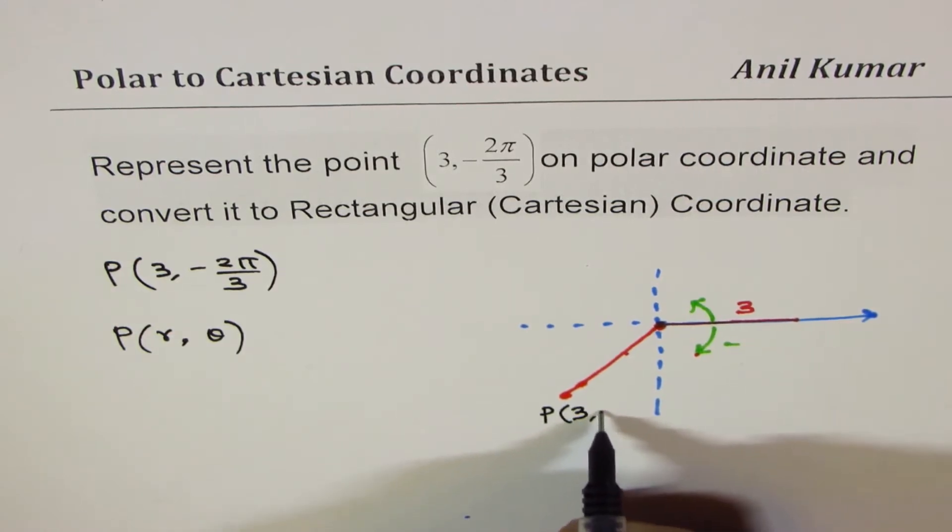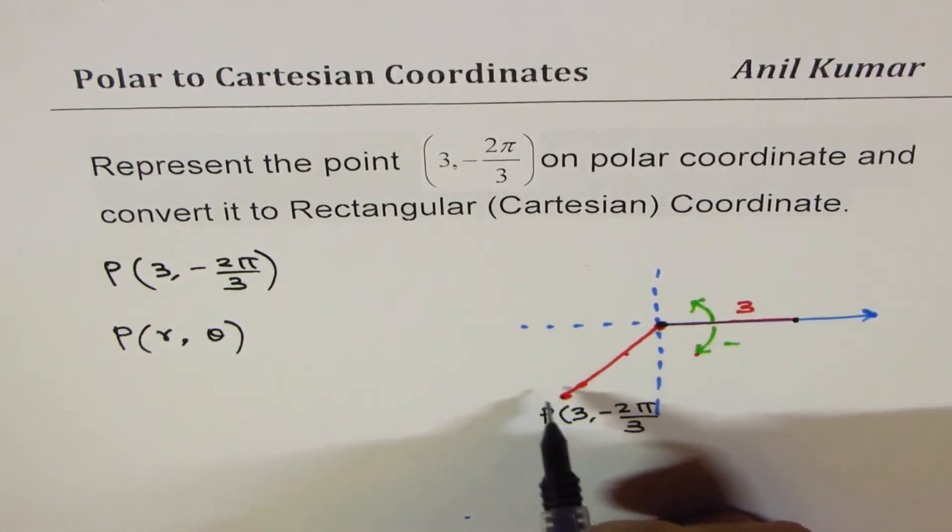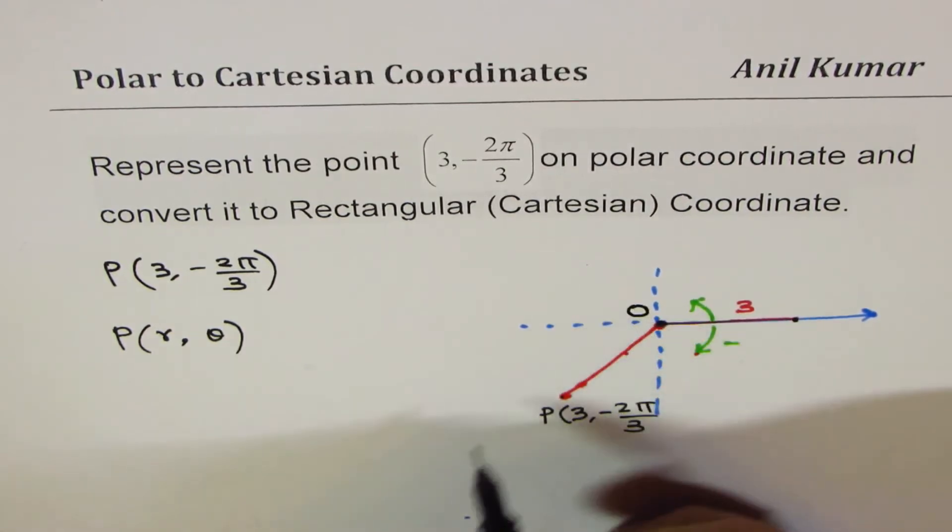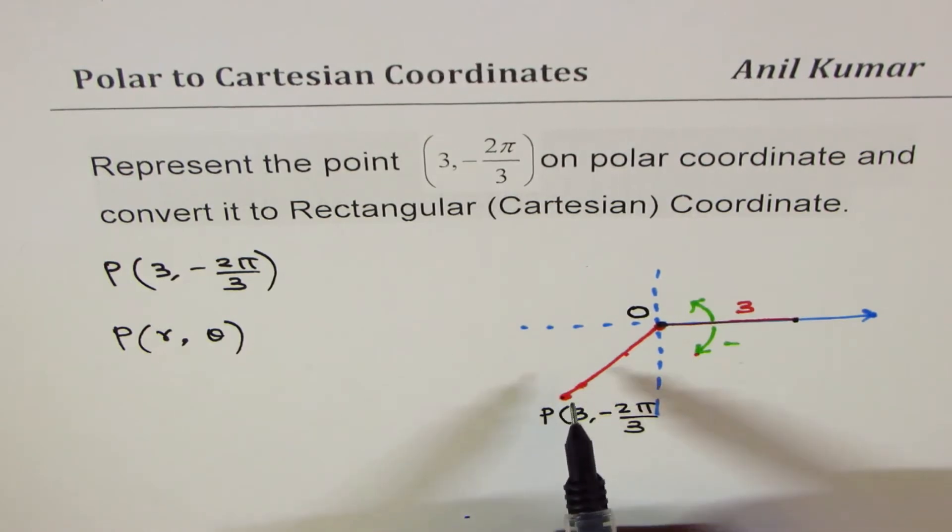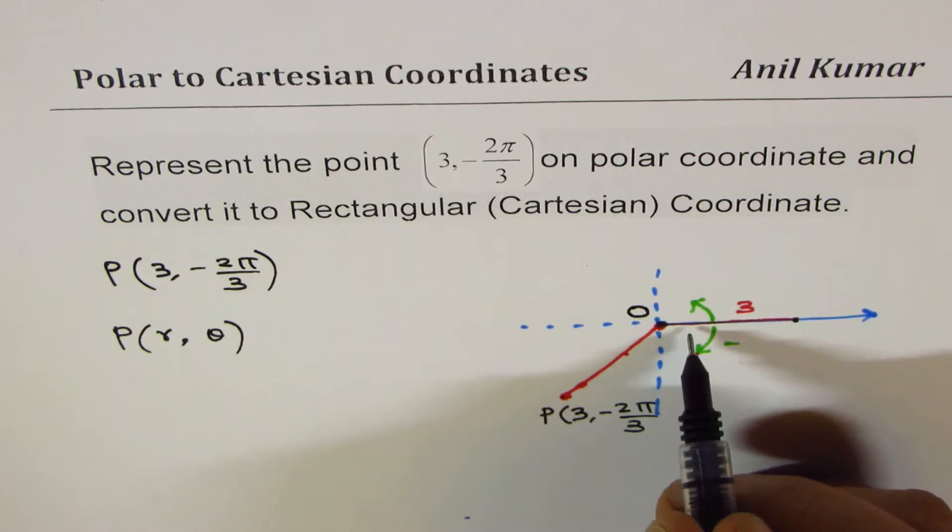Same length as 3 will give us a point P. So that becomes the point P, which is (3, -2π/3), as you can see here. That's the pole and that's the initial arm. This becomes the point P.